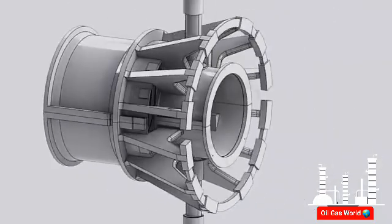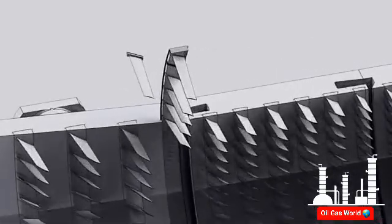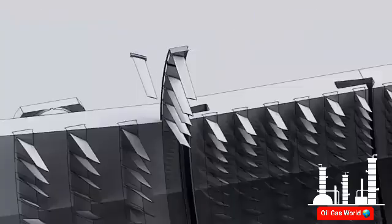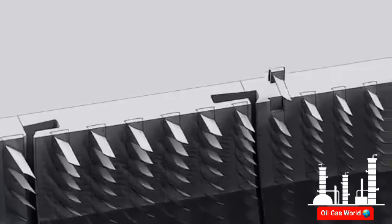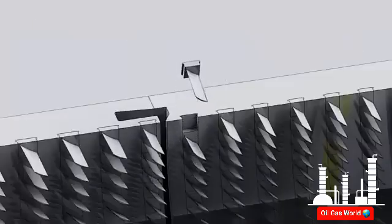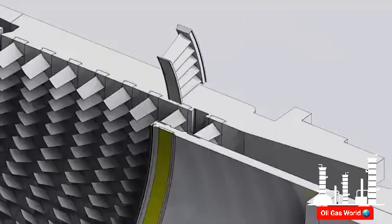The discharge casing also supports the turbine first stage nozzles. The first stage nozzle support ring is mounted on the aft end of the inner cylinder. The stationary vanes of the compressor are airfoil shaped. The blades of the first eight stages are mounted by dovetail arrangement to ring segments, which are inserted into circumferential grooves on the casing. The blades of the last nine stages have a square base dovetail and are inserted directly into the circumferential grooves on the casing. Two rows of exit guide vanes at the end of the compressor help reduce the rotation of the airflow and increase the pressure.